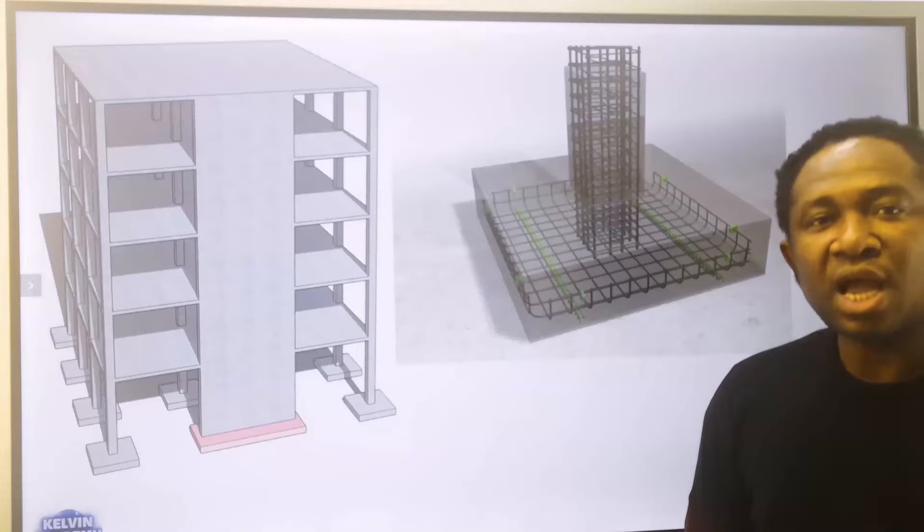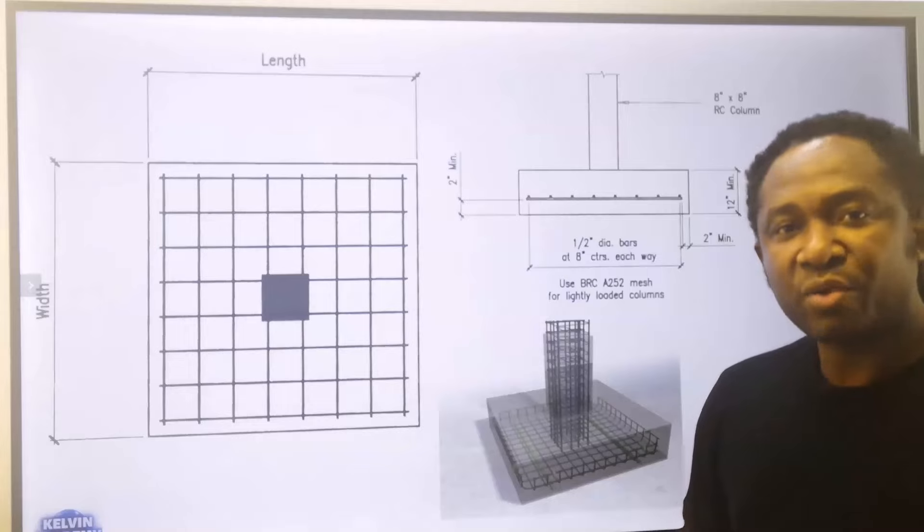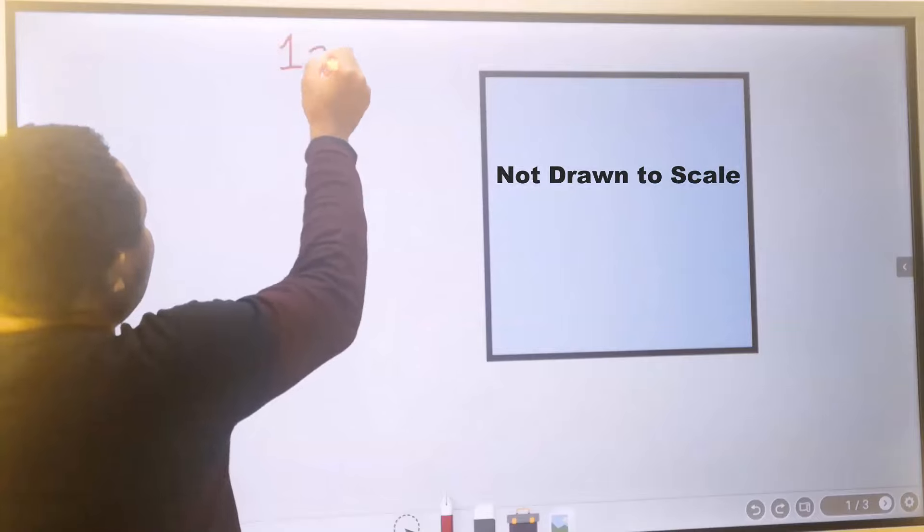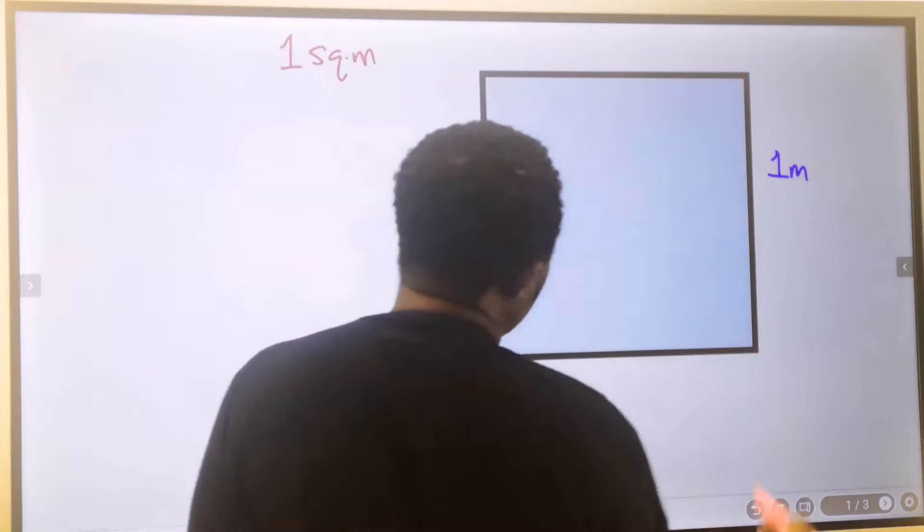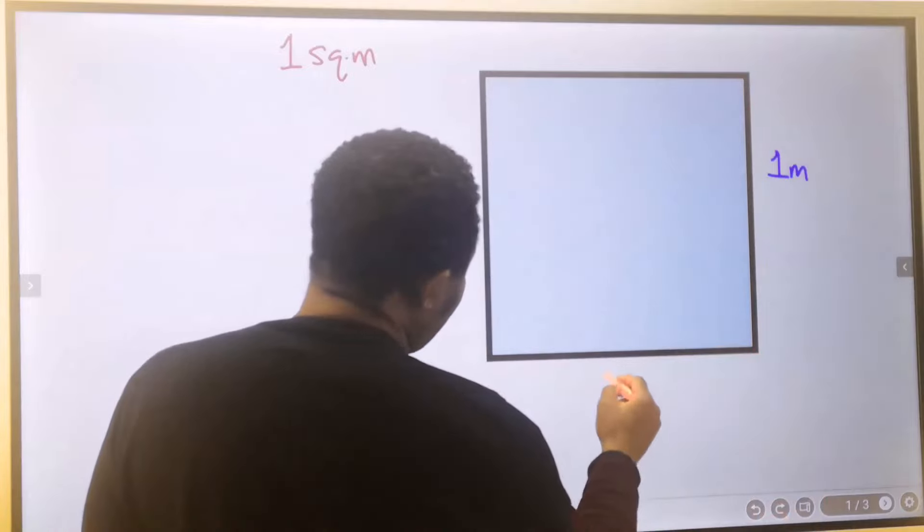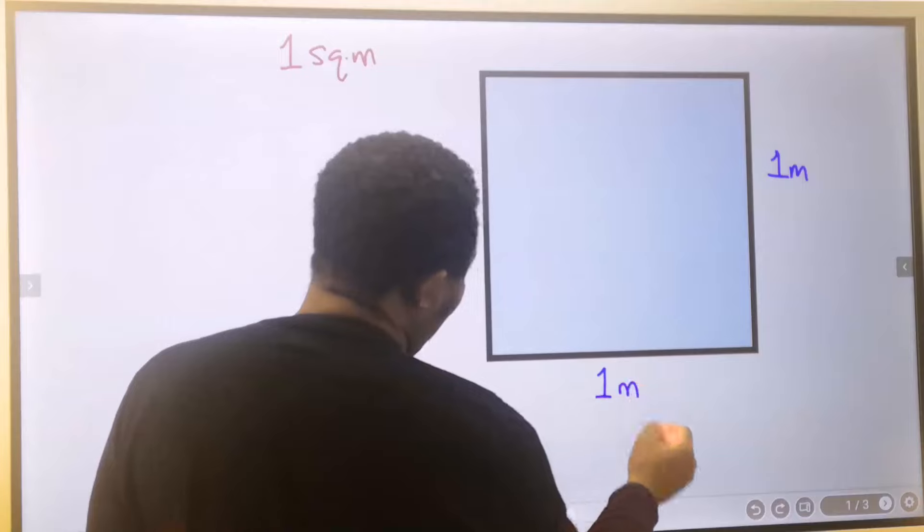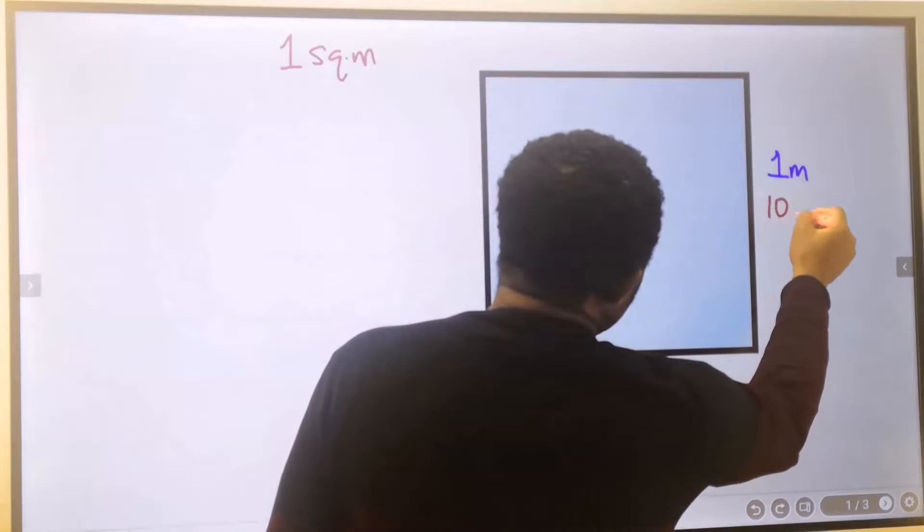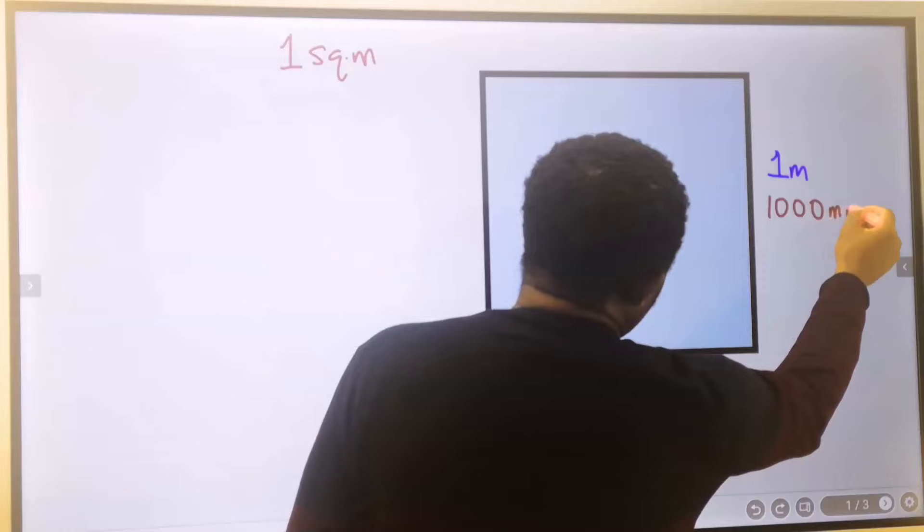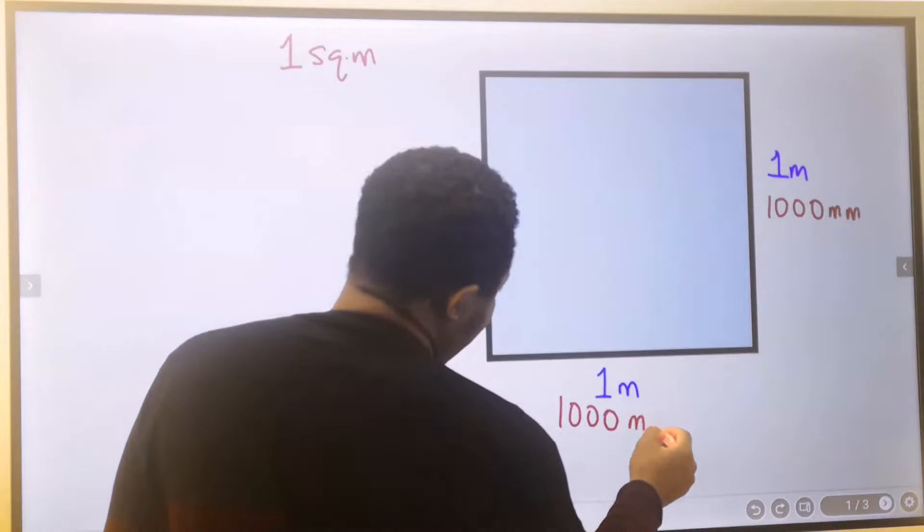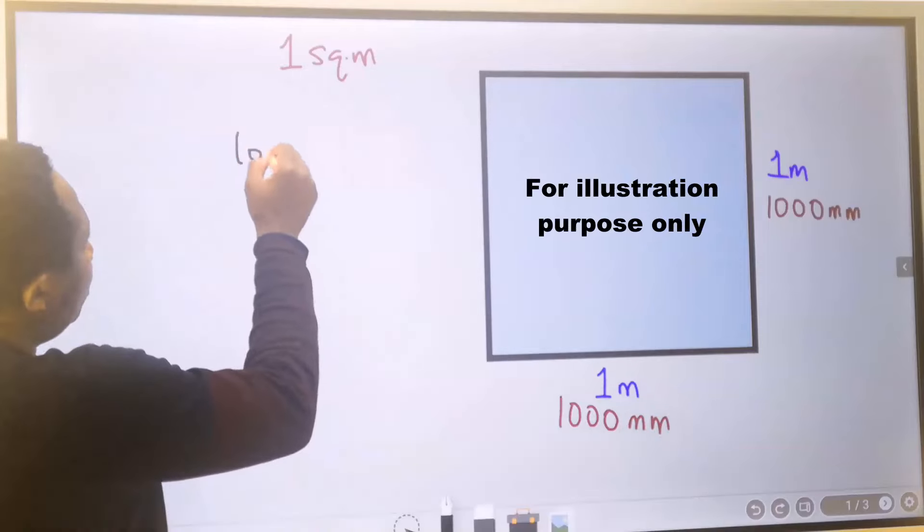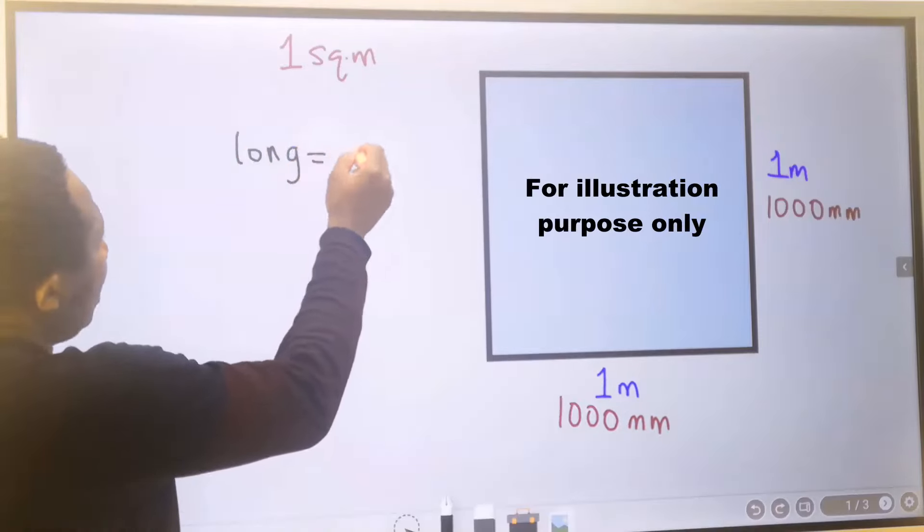For this footing and shear wall detailing condition, let's consider a reinforced concrete footing. For a one square meter, that is, this length is one meter, and this is also one meter, which is same as a thousand millimeters, and this is also a thousand millimeters. In this condition, both sides are equal.